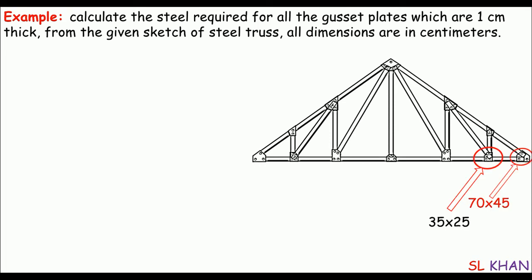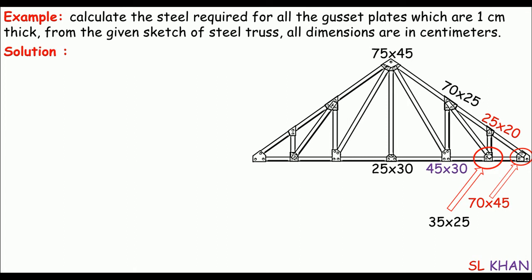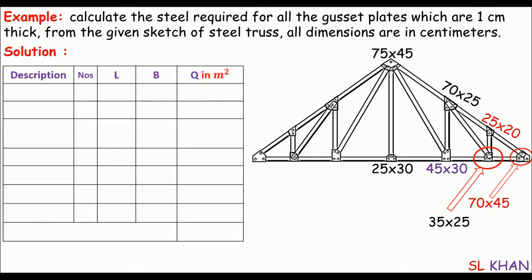To calculate the steel required for gusset plates, I'll go directly into the solution using a table. The columns of this table represent the description, number, length, breadth — the area when you multiply both dimensions — and the quantity will be in terms of area, that's in square meters. If dimensions are given in the FPS system, you can calculate the area in square feet.